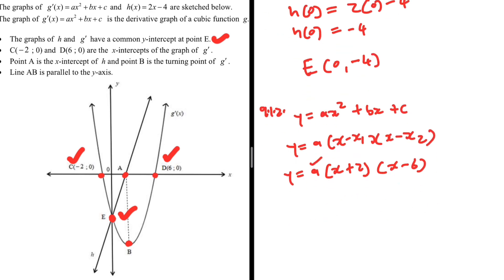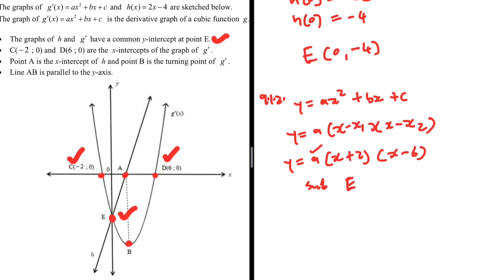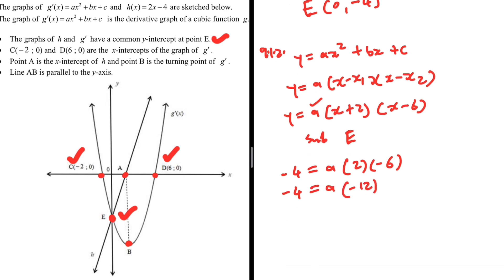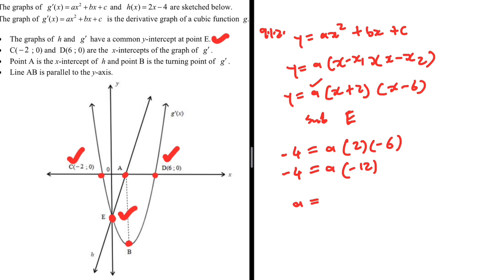We want to find the value of A. We can substitute point E, since we now have its coordinates. The Y-coordinate is −4, and X is 0, giving: −4 = A(0 + 2)(0 − 6) = A × (2) × (−6) = −12A. Therefore A = 1/3.